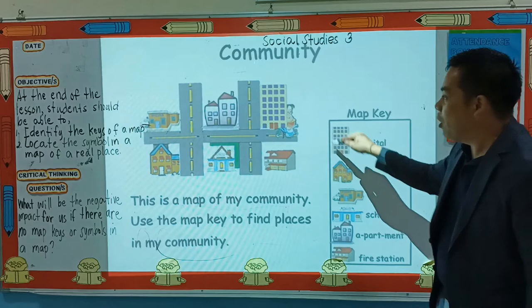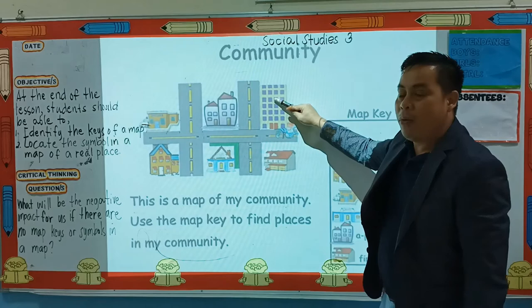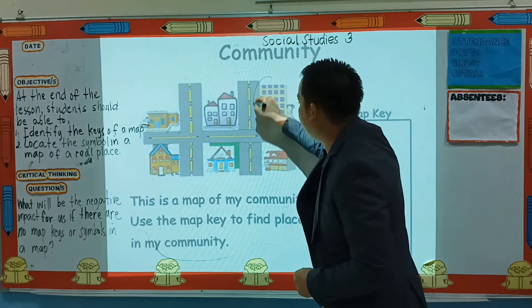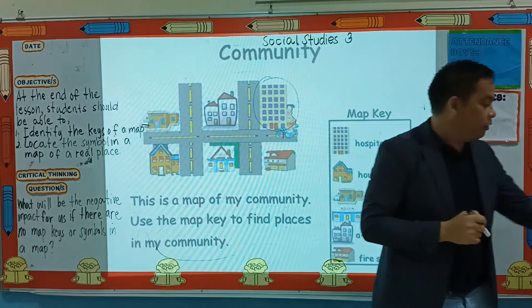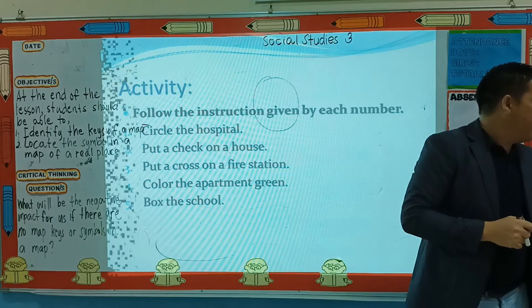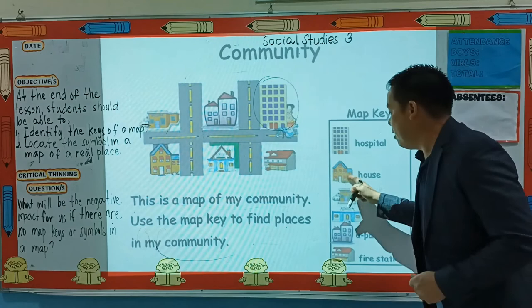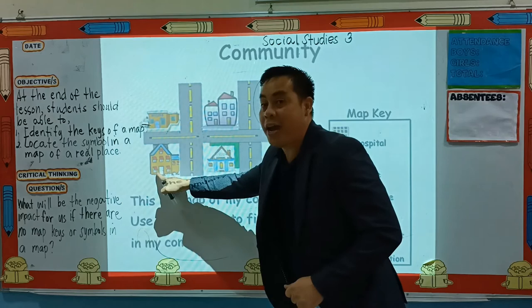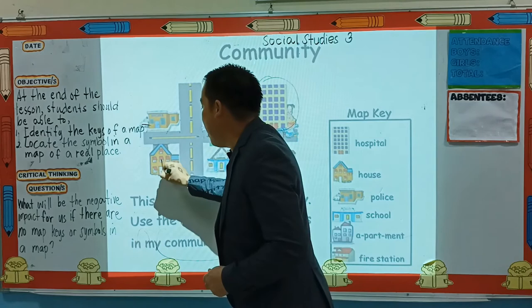Where is the hospital here? Very good - this one. So what will you do? Circle it. Next is put a check on the house. Look at this map key - where is the house here? Very good, so this is the house. This is my house. So what will you do? Put a check.